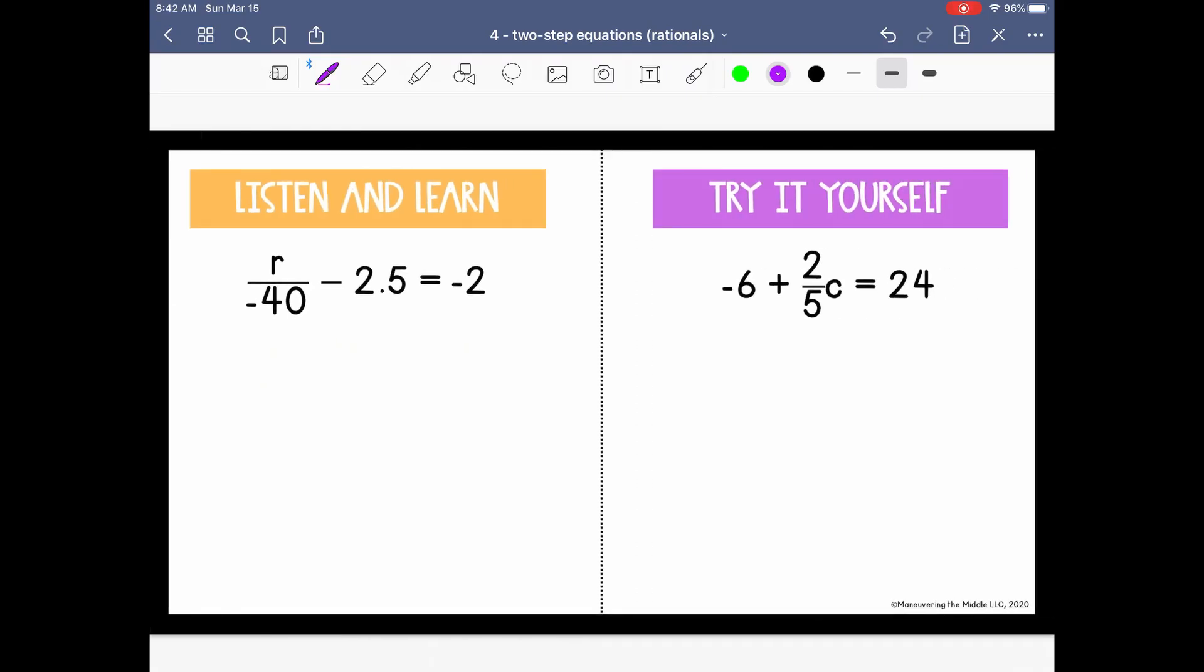Let's do two more examples before some real-world problems. So here, r divided by negative 40 minus 2 and 5 tenths equals negative 2. Let's get rid of the constant term first. So instead of subtracting 2.5, we'll cancel it by adding 2 and 5 tenths. So this cancels on the left, so we're left with r divided by negative 40 is equal negative 2 plus 2 and 5 tenths is positive 5 tenths.